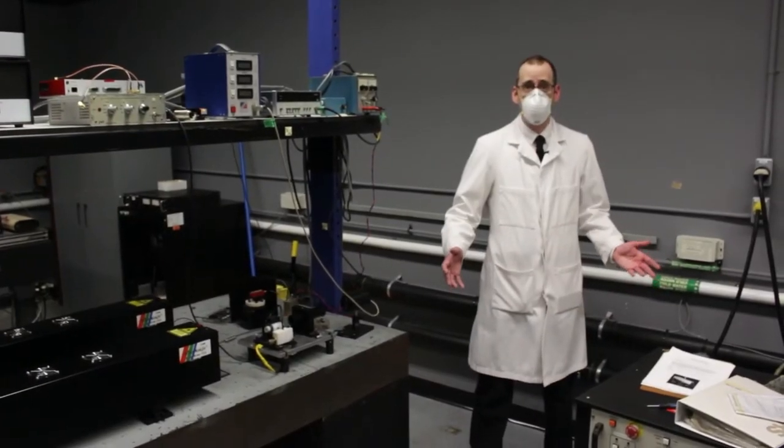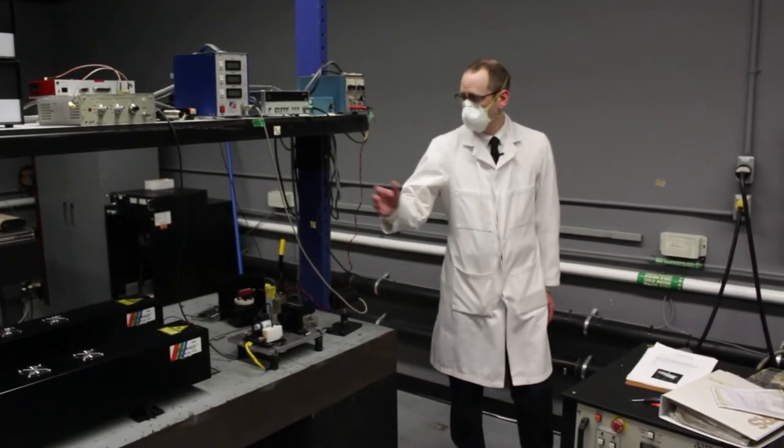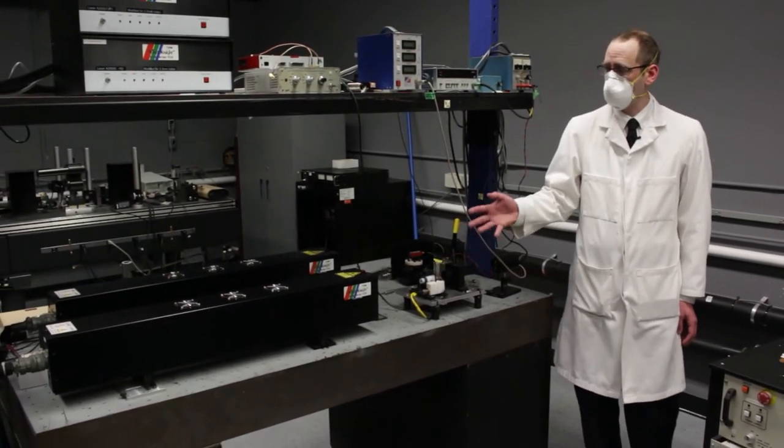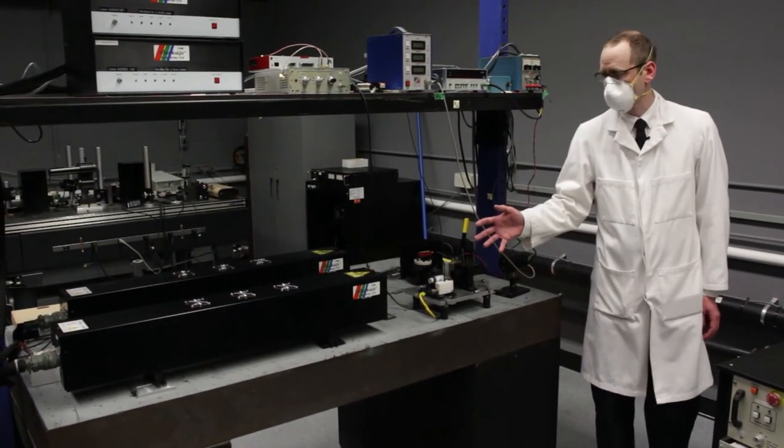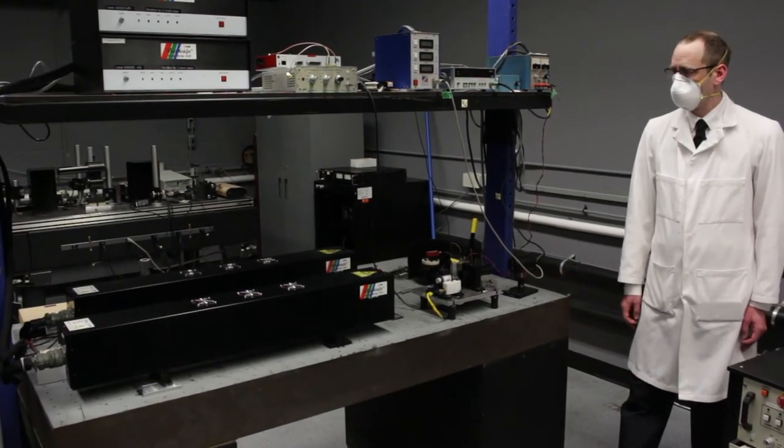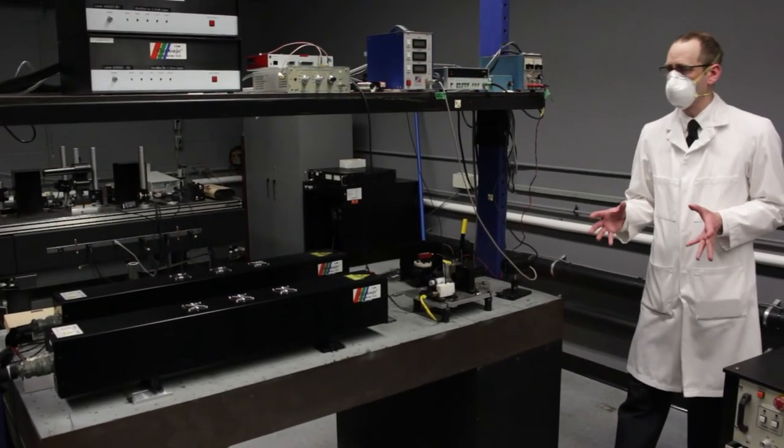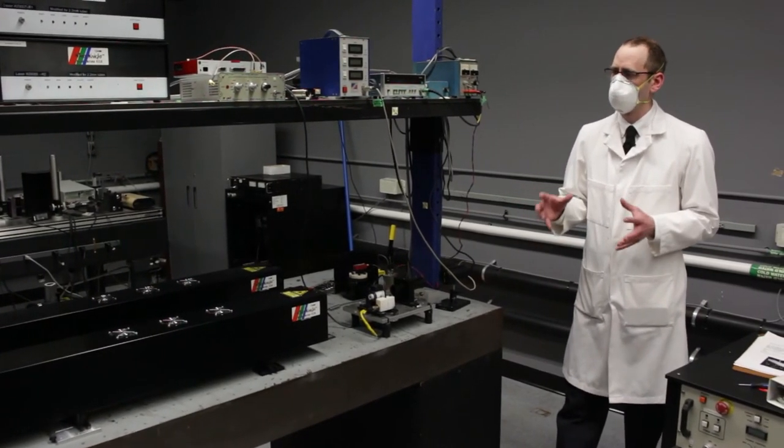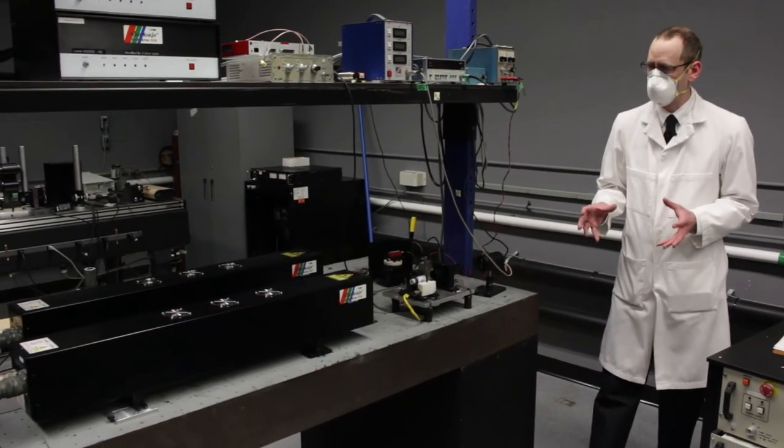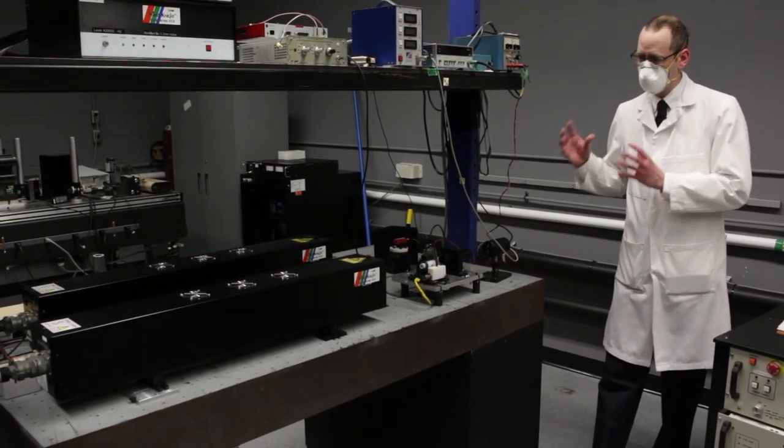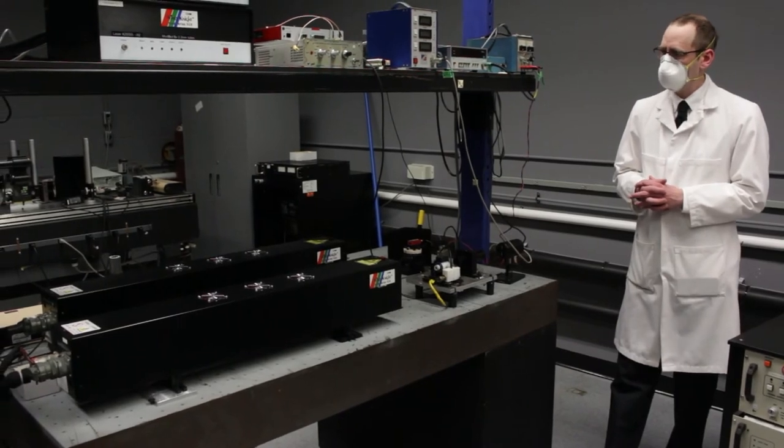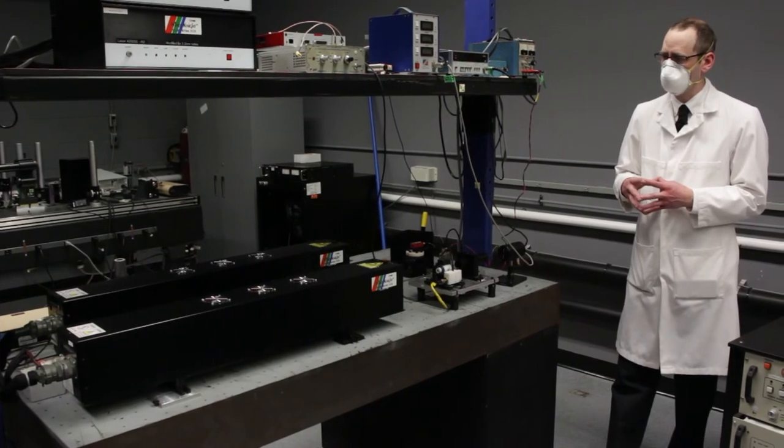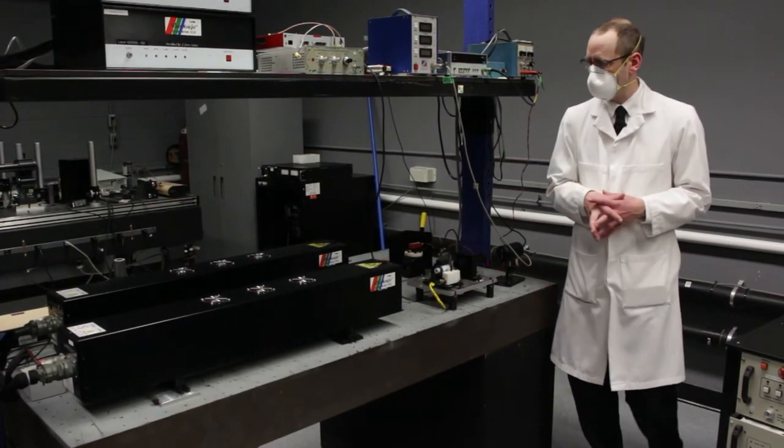So on this side of the lab, we have some slightly different technologies. So these lasers right here in their former life were actually used for creating full color commercial holograms. So these are what we call RGB lasers. Most lasers only produce one wavelength or one color of light at a time. These ones produce red, green, and blue all at the same time. So three different colors of light at the same time. And so that made them really useful for doing full color holography.